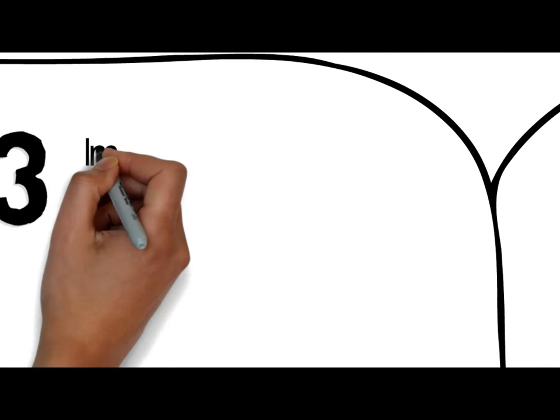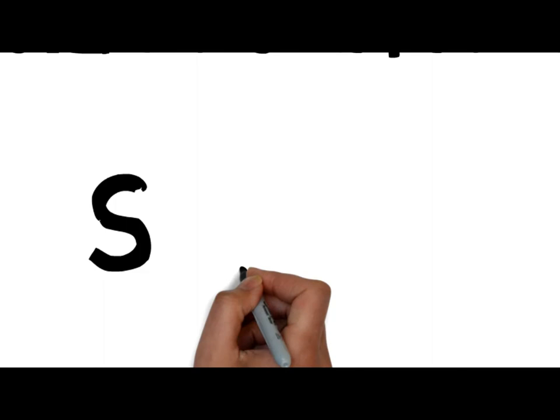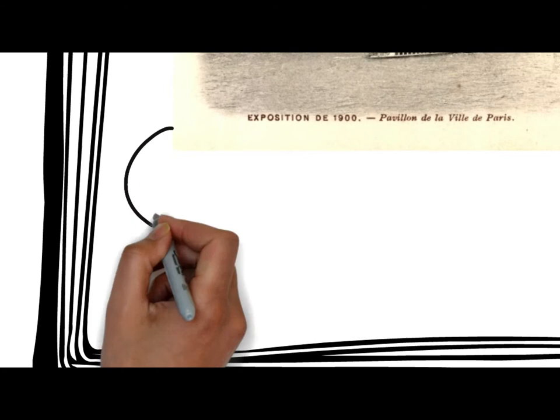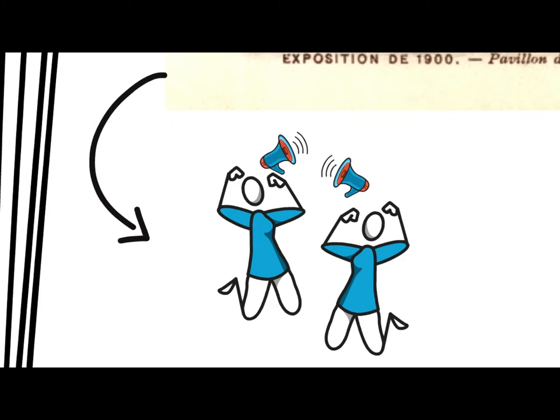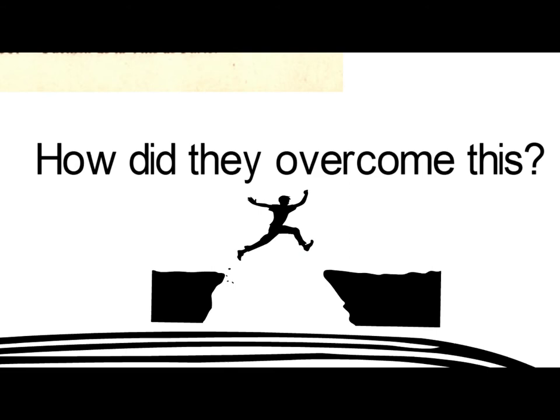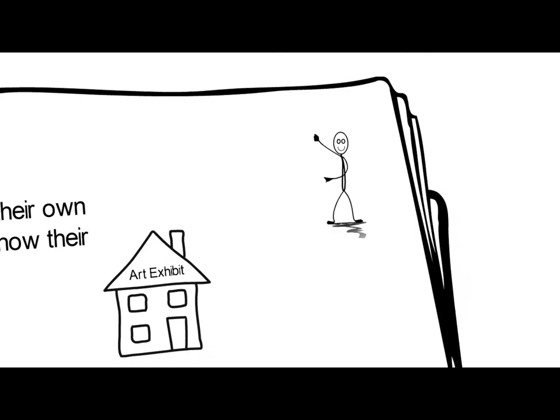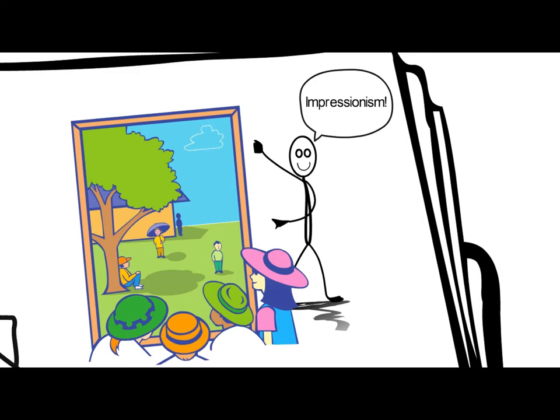That is why, in 1863, Impressionism Art was not allowed to participate in the official Salon — where artists could show their work, gain recognition, and make sales. That's also the reason why the Impressionist artists persisted and continued painting to spread what Impressionism Art really is. They overcame this by organizing their own art exhibit to show their style of art, and by that, people acknowledged their movement. Later, the amount of work being rejected by the official Salon was staggering.